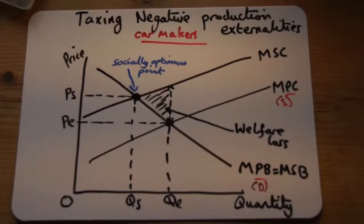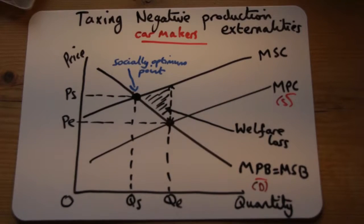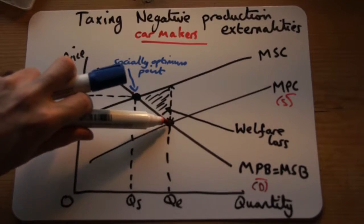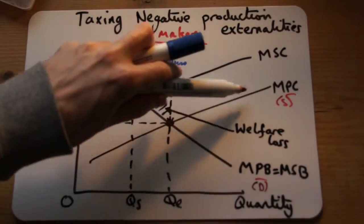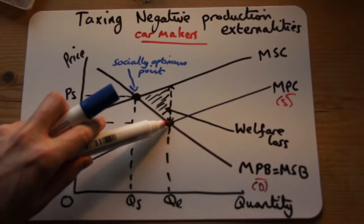This is a how-to guide on taxing negative production externalities. We have car makers here producing at the free market point where supply equals demand, where MPC equals MPB.